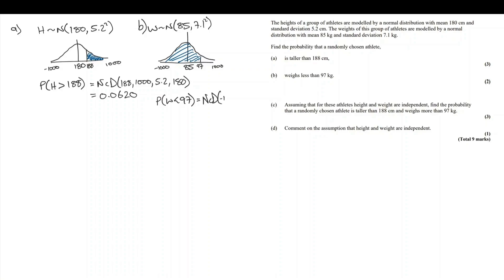The probability that the weight is less than 97, according to our diagram, the minimum we're interested in is negative 1000. The maximum is 97. Standard deviation is 7.1. And the mean of 85. Into our calculator and we get an answer, expecting a large answer here, of 0.9545. And that, once again, passes the sense check.